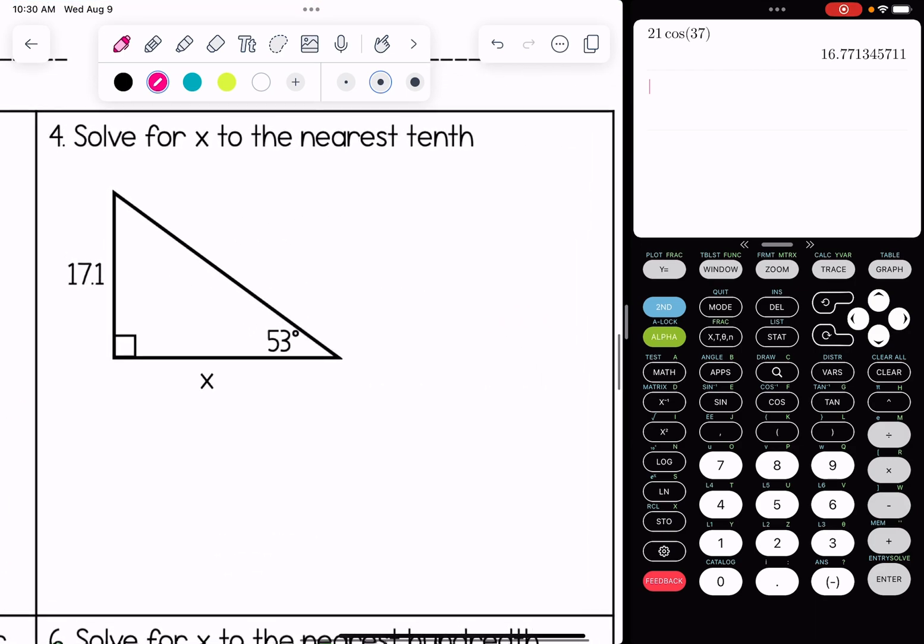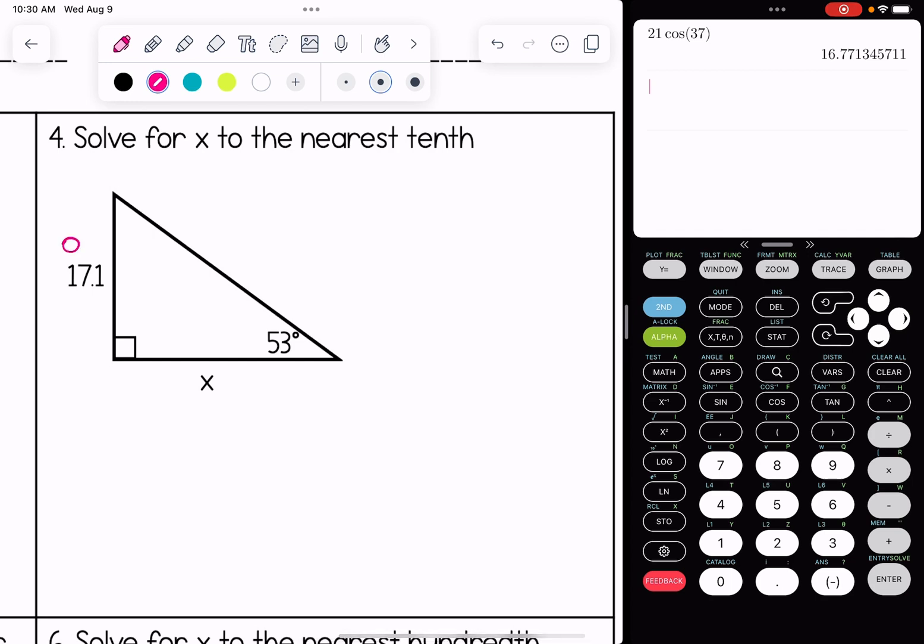Number four, we're solving for x to the nearest tenth. Let's go in and label our sides. This is going to be an example using tangent. Tangent of an angle is equal to the opposite side over the adjacent.